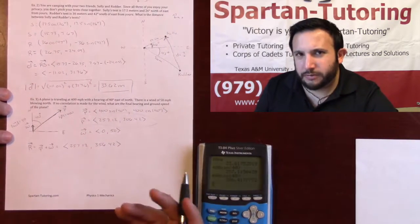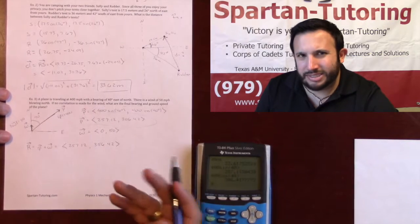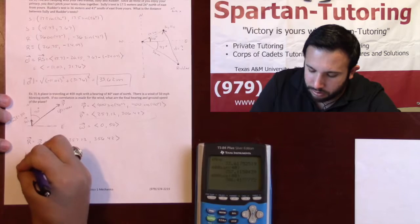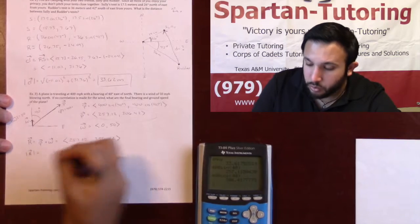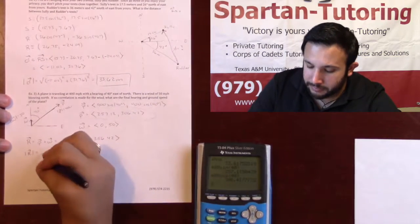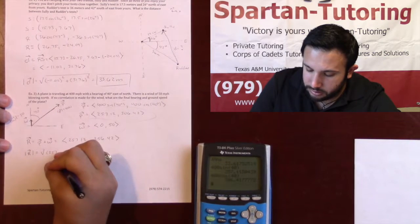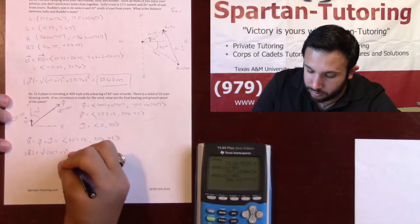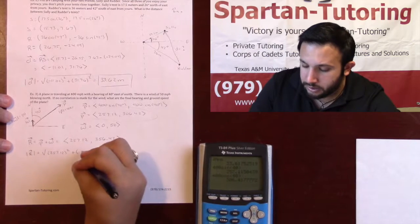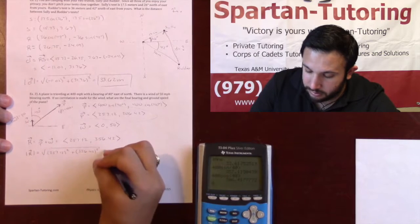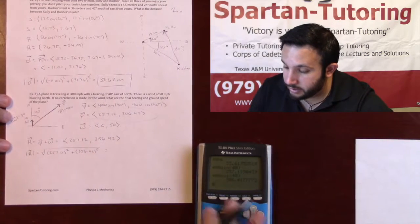Let's find the ground speed first. I always think the magnitude is the easiest. So the magnitude of r, which will be my ground speed, is the square root of the x term squared, 257.12 squared, plus the y term squared, 356.42 squared.